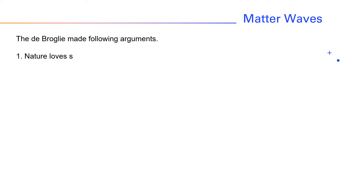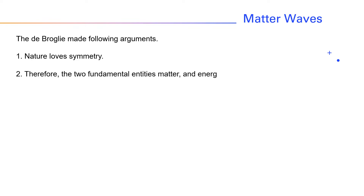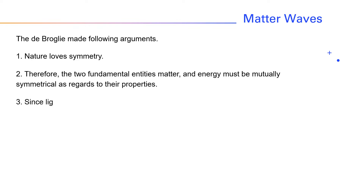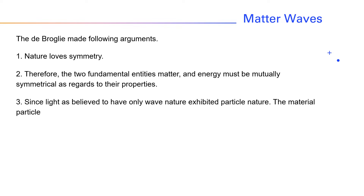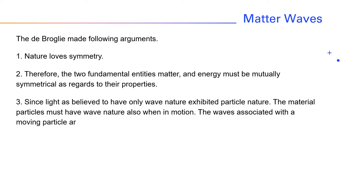First, nature loves symmetry. Therefore, the two fundamental entities — matter and energy — must be mutually symmetrical as regards to their properties. Since light, as believed to have only wave nature, exhibited particle nature, the material particles must have wave nature also when in motion. The waves associated with a moving particle are called matter waves.